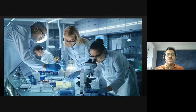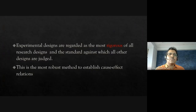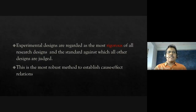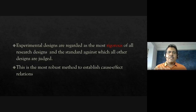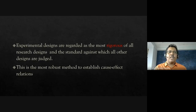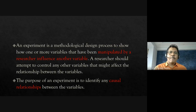Experimental research in social science has a lot more aspects to it. Experimental designs are regarded as the most rigorous because that is the standard against which all other designs can be judged. If I have to establish cause-effect relations — for example, that time spent on online classes causes greater understanding — I have to go for an experimental design, as mere correlation tests would not be enough.